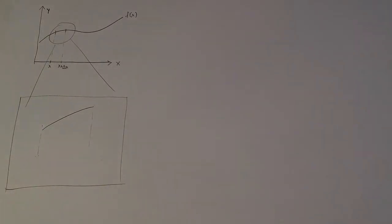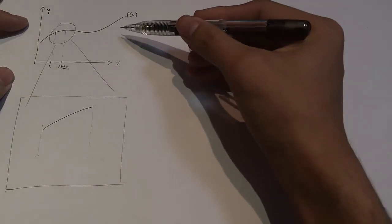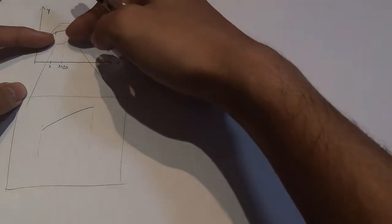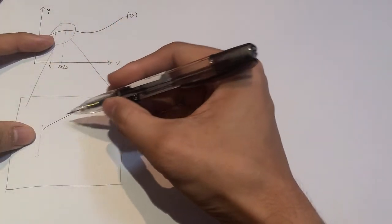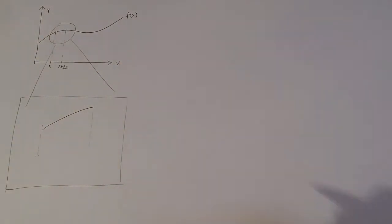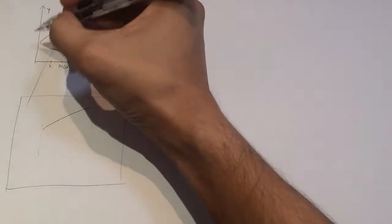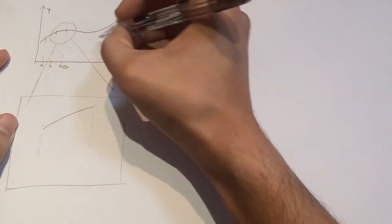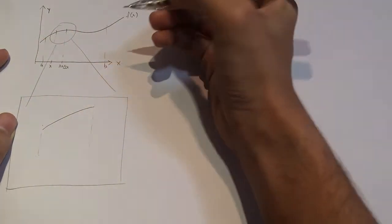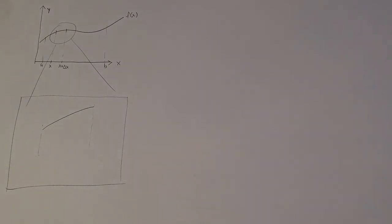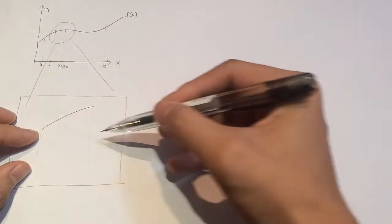We can try to approximate how long each of these small sections are. Now let's imagine that we have the line f of x again, and I'm going to zoom in to just this section. We're going to try to find the length of just this section, and then from there we could write the expression for the length of the whole line, which might go from say a to another point b.